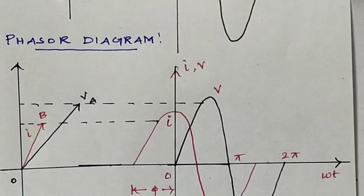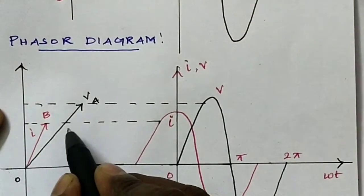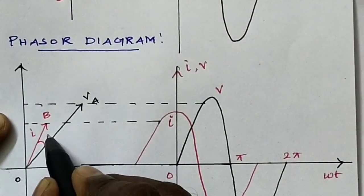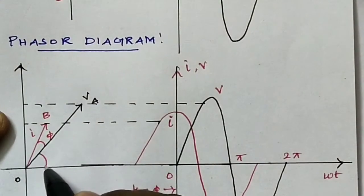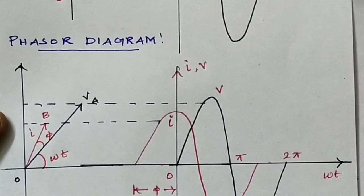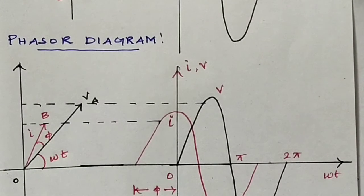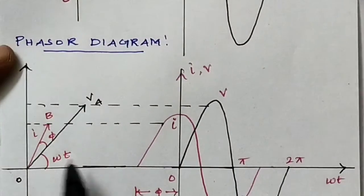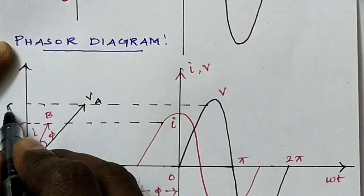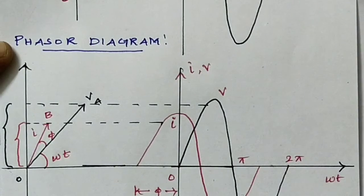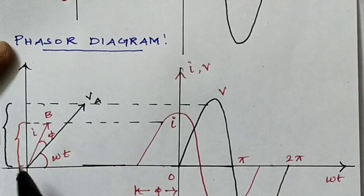Now the phase relation: here the current leads the voltage by angle phi. The angle between phasor OA and the reference axis produces the phase angle omega t. The vertical projection gives the instantaneous voltage, and the vertical projection of OB gives the instantaneous current. So using the vertical projection, we get the instantaneous voltage and instantaneous current values.